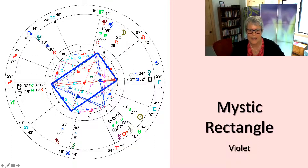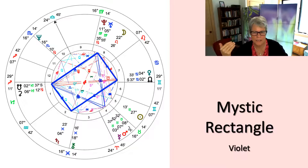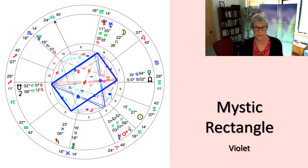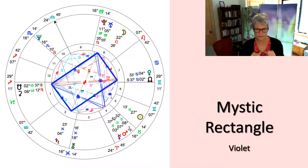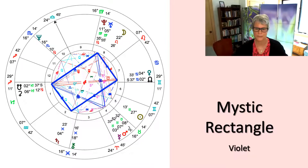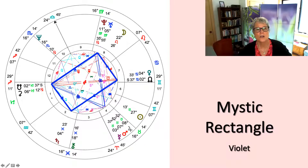We've got these two oppositions, connected through two trines and two sextiles. According to Robert Hand, it's important to have dynamic tension in any chart pattern — we definitely have that with the Mystic Rectangle. The trines and sextiles on their own could just create a loop where one is repeating old patterns and having a really hard time breaking out of them. The oppositions provide the necessary release point.